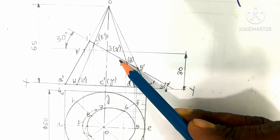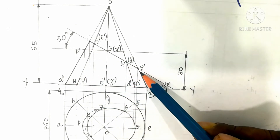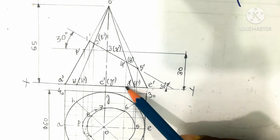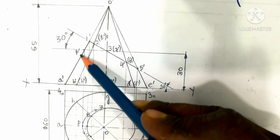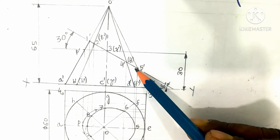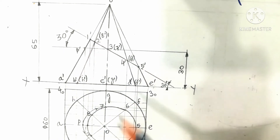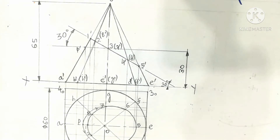The removed portion is marked using an HP pencil. This portion of the cone is called the truncated cone. The cone is cut inclined, the apex part is removed, and the base part that remains is called the truncated cone.